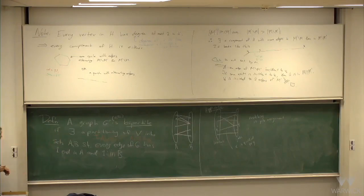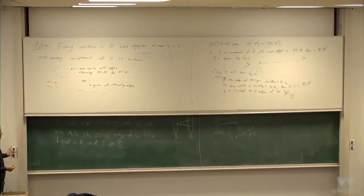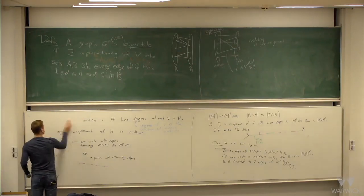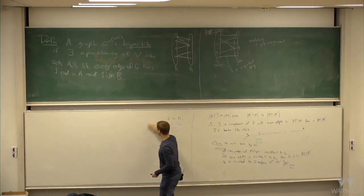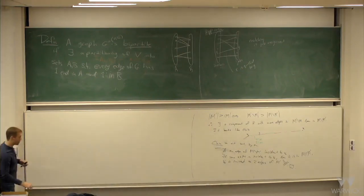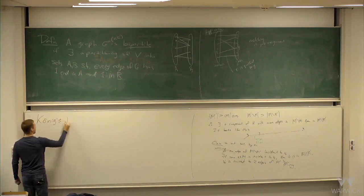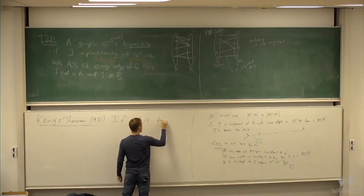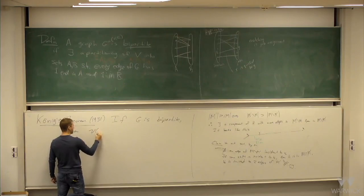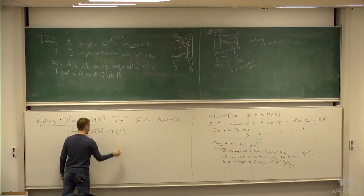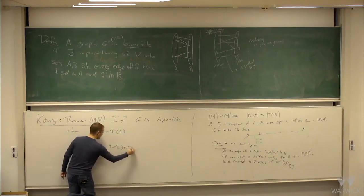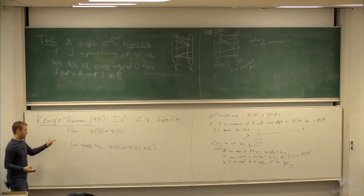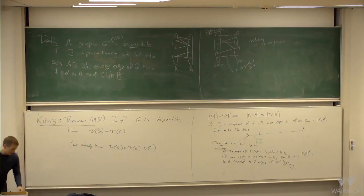I just want to state one theorem, and then we'll be done. We'll start next lecture by proving this. It's called König's theorem. Remember we said the biggest matching is always at most as large as the smallest vertex cover — that's nu(G) ≤ tau(G) for all G. König's theorem from 1931 says that if G is bipartite, then nu(G) equals tau(G): the size of the biggest matching equals the size of the smallest vertex cover. We already know the inequality holds for all G, and I gave an example showing they're not always equal, but if your graph is bipartite, they are equal.